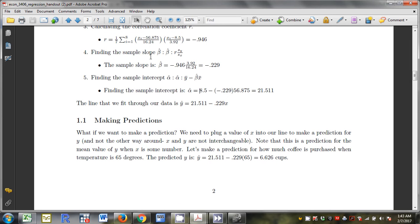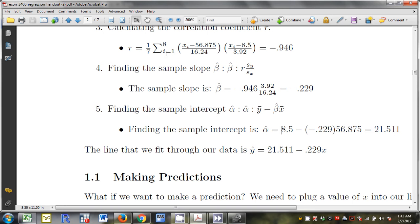Correlation coefficient. Again, I'm measuring how far each data point is from the mean. So the mean of x was 56.875, mean of y is 8.5. 16.24, 3.92. It's negative. So as temperature goes up, coffee goes down. That's not surprising. It's minus 9.46.